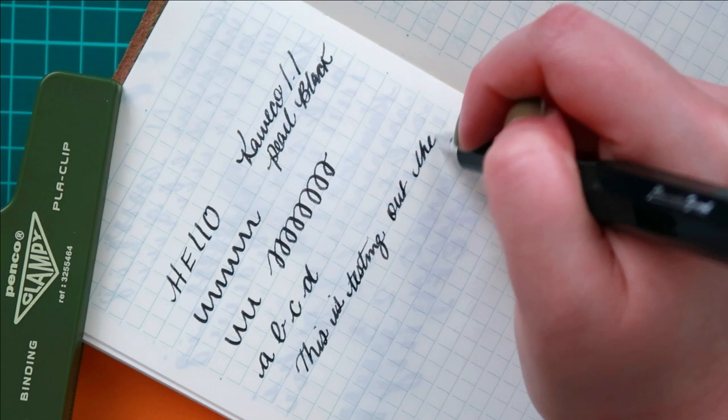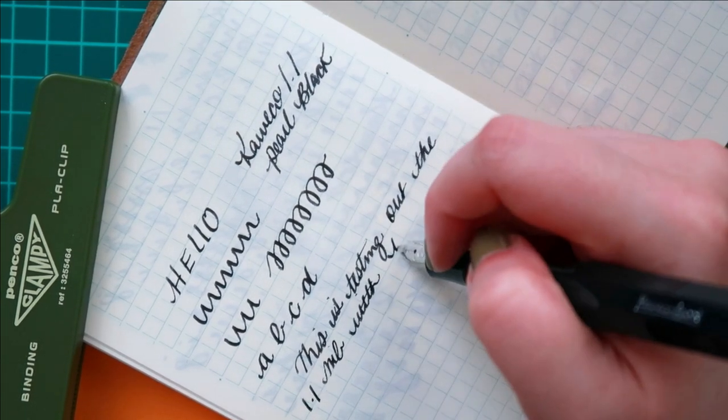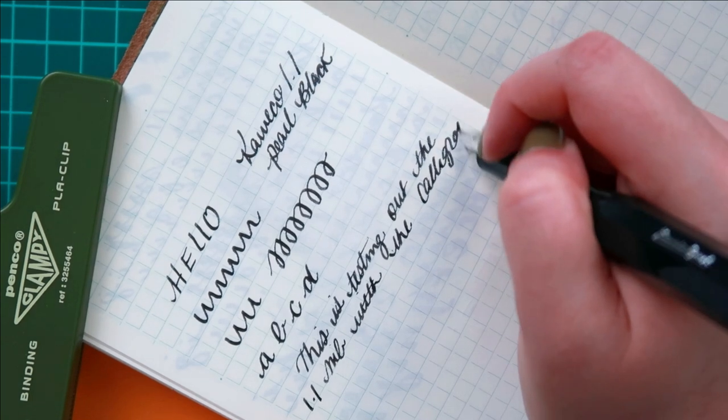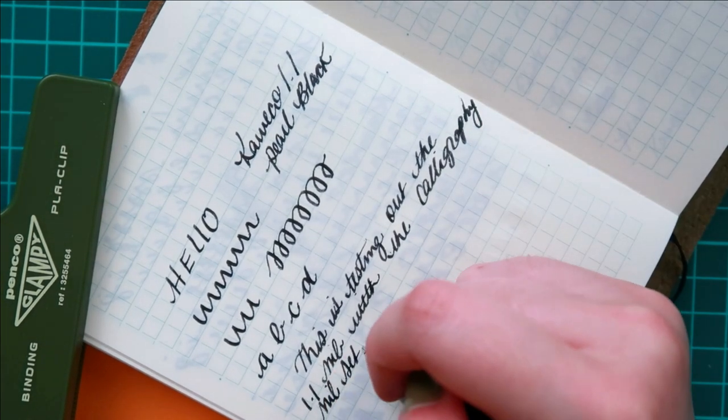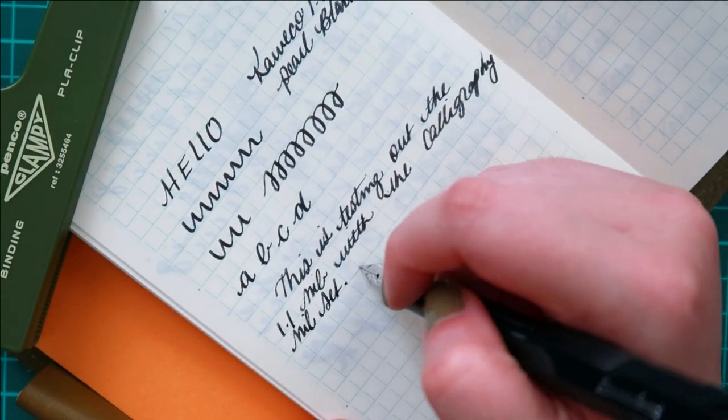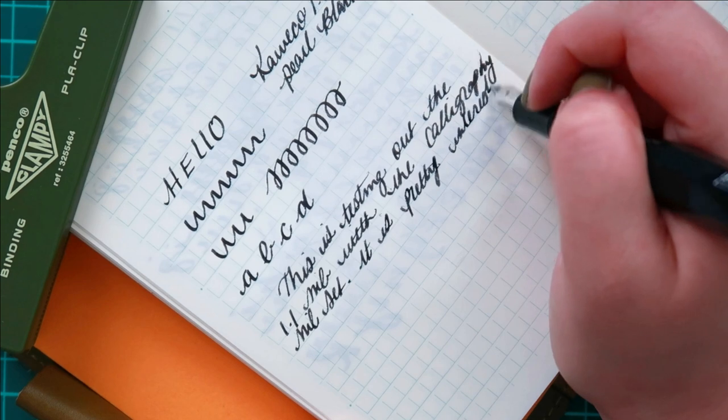I do kind of want to try out an Esterbrook stub nib but that may be something that will wait while I learn how to use this new set. But let me know if you have a preference of stub nibs or if you've never tried a stub nib. I'm just so curious about it now.